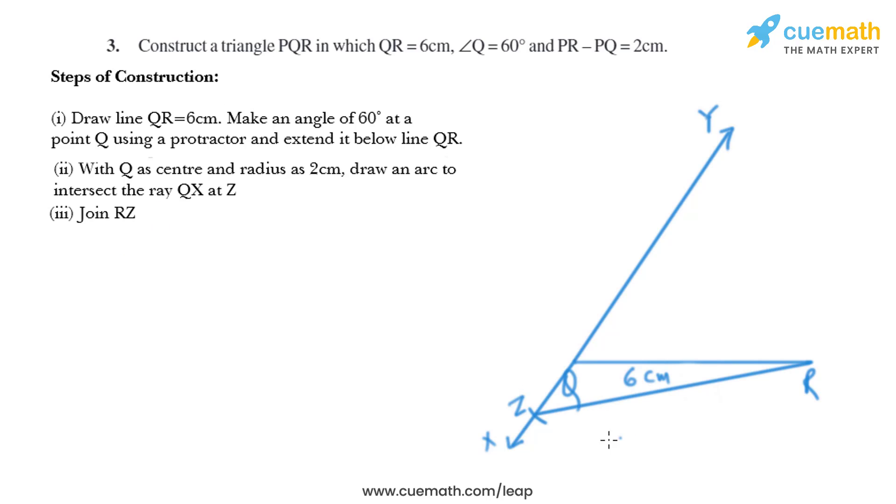In the next step, we need to join R and Z. Now with Z and R as centers and radius greater than half of ZR, draw arcs on either side to intersect each other. I'll put the compass at Z, take the radius greater than half of ZR, and draw an arc. Similarly, we'll put the compass at R and with the same opening draw another arc that intersects.